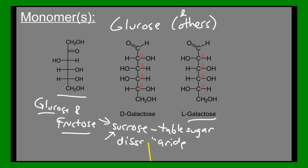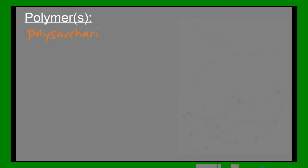Monomers of carbohydrates make up polymers of carbohydrates. The polymers of carbohydrates are called polysaccharides. Saccharide means sugar, and poly — from the Greek — means many. So a polysaccharide is a sugar made up of many simple sugars, a bunch of different sugar molecules bonded together.